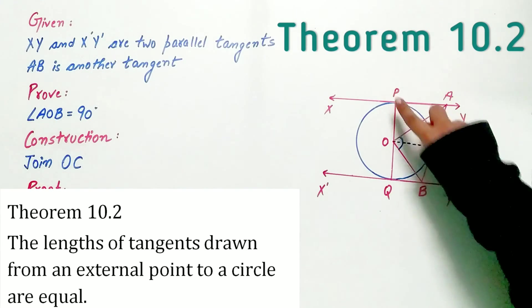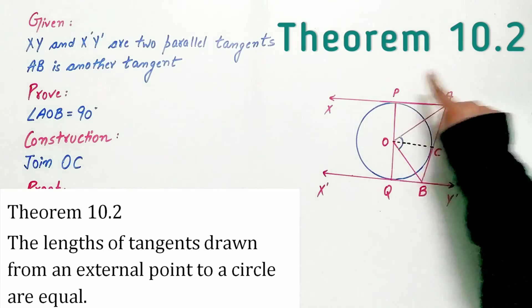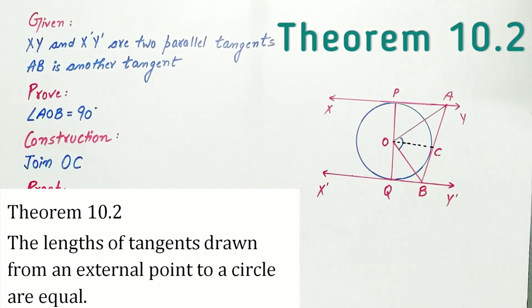AC and AP are the tangents to a circle. Hence, AP is equal to AC by theorem 10.2.